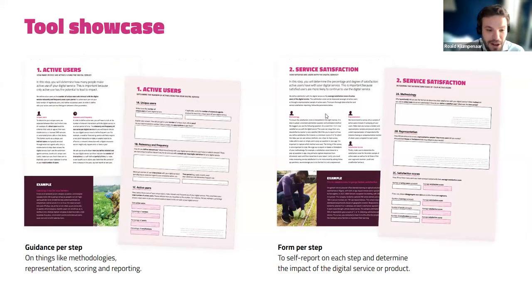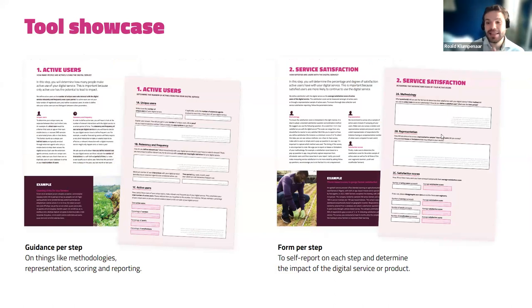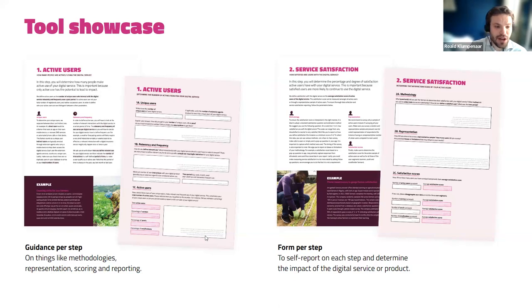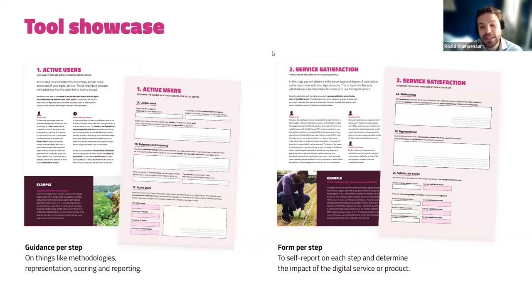Once you have collected your indicators, it's about how you now report and summarize this in a clear and usable overview of your self-reported impact. You have received the download link in your mailbox. The tool consists of seven steps, each with a guidance page and a form, because we would really like to encourage you to start self-reporting immediately with easy-to-fill boxes for each of the seven sections.